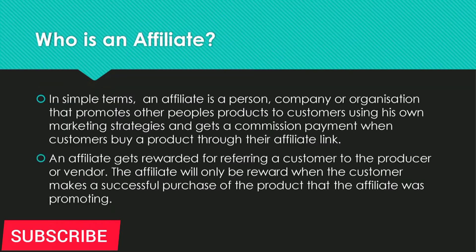Who is an affiliate? An affiliate is you — the person, company, or organization that goes to this producer and partners with them to promote their product. In this setup, we have three parties: the producer, you the affiliate or the marketer, and the customer. You are the affiliate. You go to this organization or company, register as an affiliate, start promoting their products, and whenever someone buys using your link, you get paid. In simple terms, an affiliate is a person, company, or organization that promotes other people's products to customers using their own marketing materials.